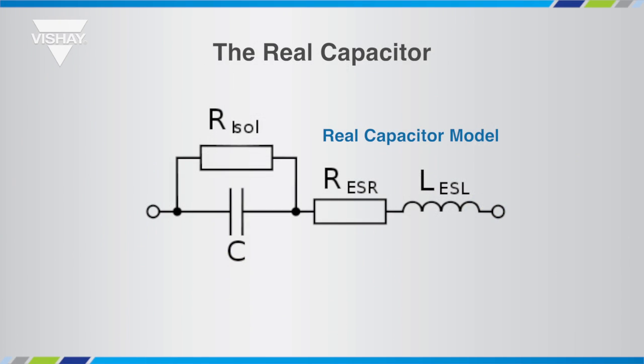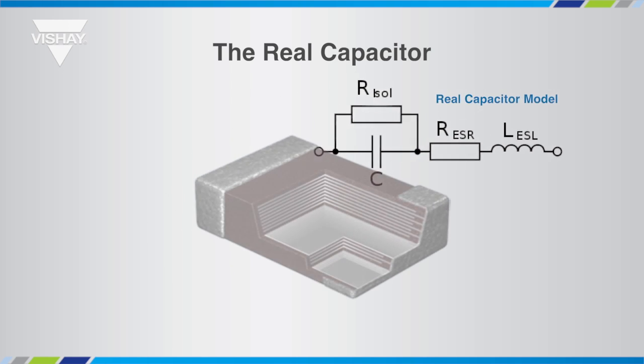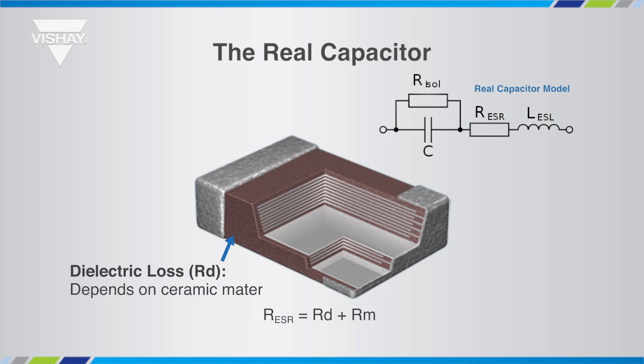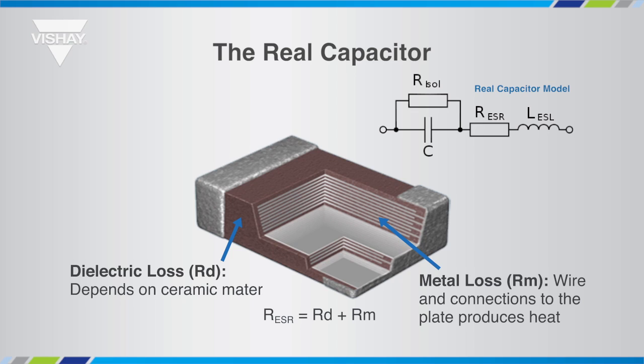A real capacitor shows deviations from the expected ideal capacitor performance. A number of parasitic parameters limit the performance in high frequency and/or high power applications. The most important of those is the ESR, or Equivalent Series Resistance, which is a combination of losses in the dielectric material and in the metal electrodes and termination.